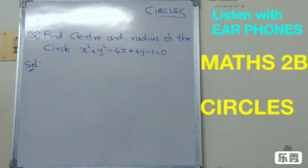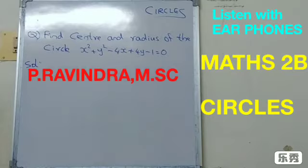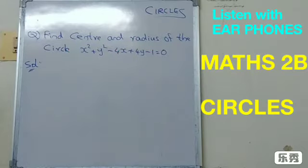Students who have come to senior intern, now this is a basic question from circles. Find center and radius of a circle x² + y² - 4x + 4y - 1 = 0.